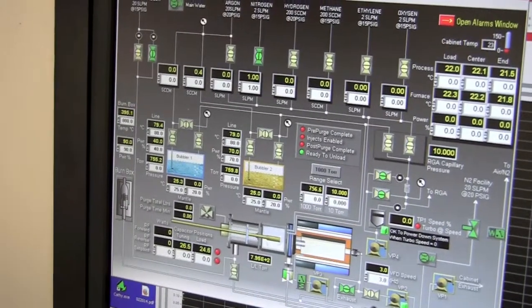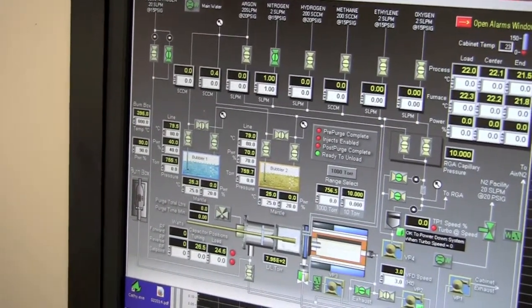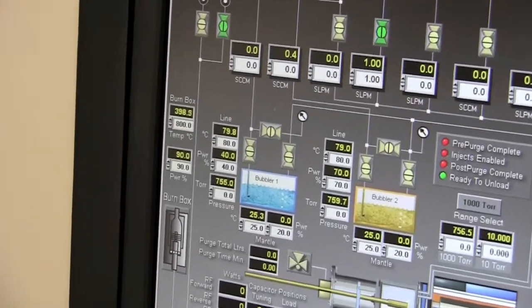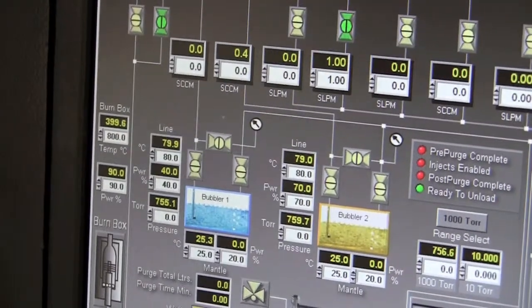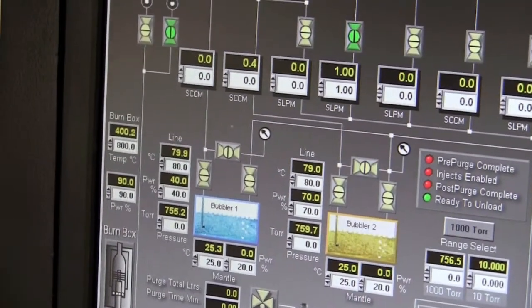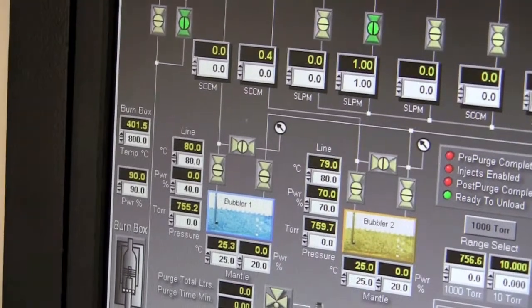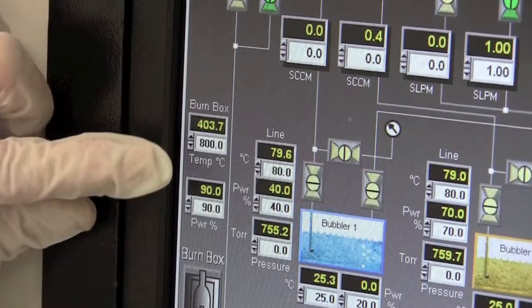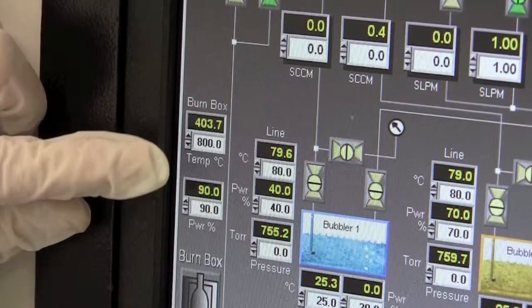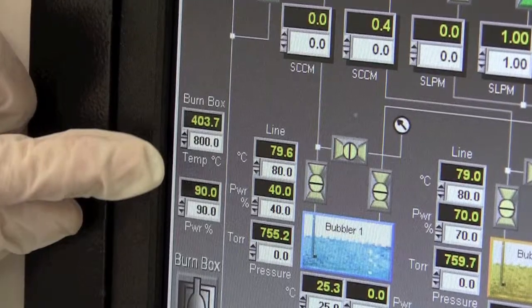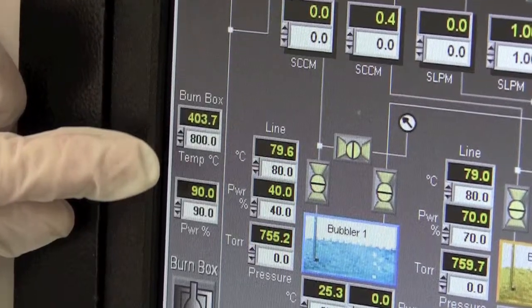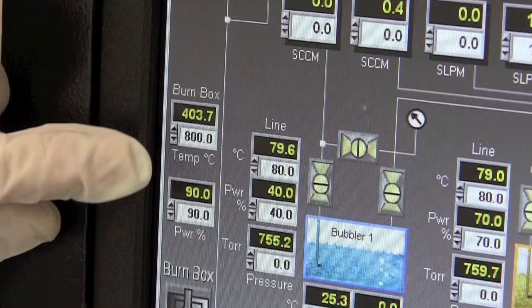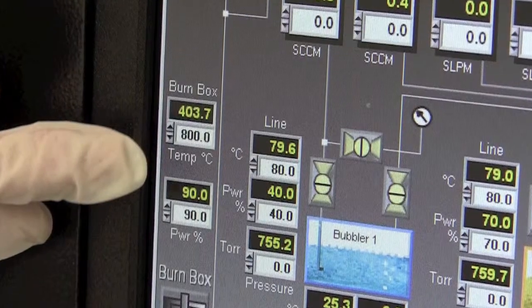For a recipe to begin, we need to make sure the burn box or CDO is powered on. The burn box is responsible for burning up any surplus gases that we exhaust out. To verify it's powered on, we check that the temperature is set to 800 degrees and power is set to 90 degrees. The recipe will not start unless the burn box has reached at least 700 degrees C. Once we verify all the burn box values are correct, we can go into the service chase to check the water cooler and gas cylinders.